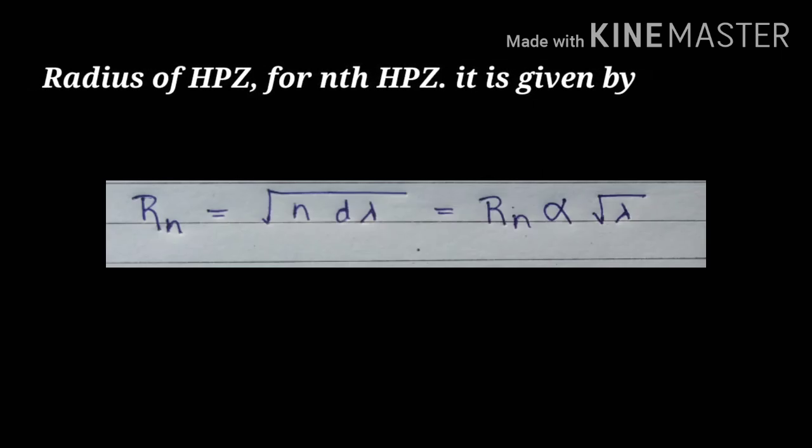Radius of half period zone for nth half period zone is rn equals to under root n into d lambda, which equals rn times d under root lambda.